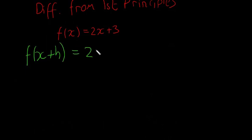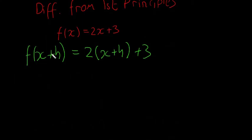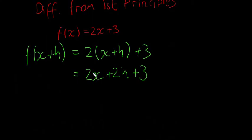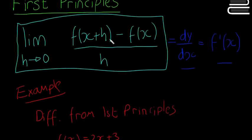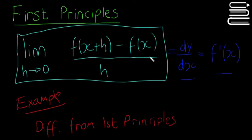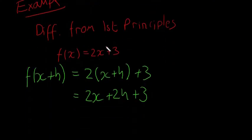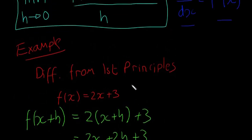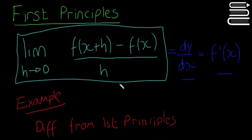f(x + h) is going to be equal to 2(x + h) + 3. So anywhere in the function where you have x, you put x + h instead. That's going to expand to 2x + 2h + 3. So now we have our f(x + h), which is 2x + 2h + 3. Our f(x) is just 2x + 3, and our h is just h.